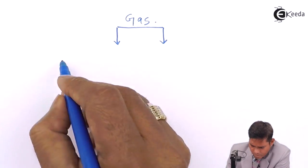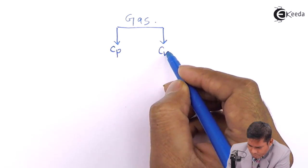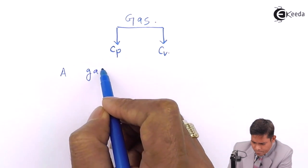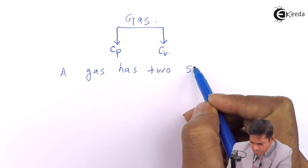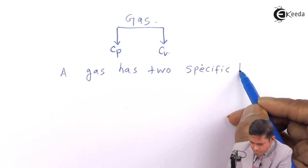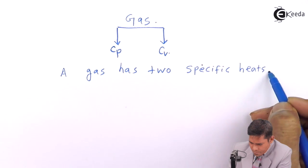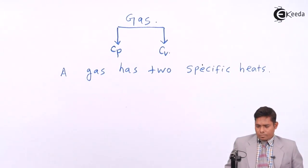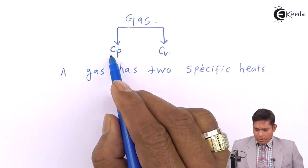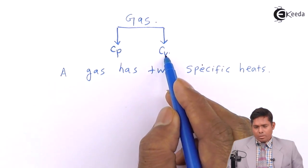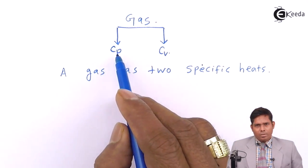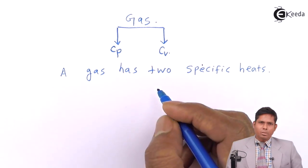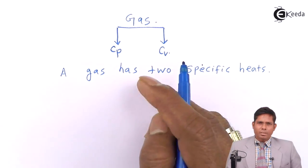One is specific heat at constant pressure, and the second is specific heat at constant volume. A gas has two specific heats: one is called Cp and another is called Cv. Cp is specific heat at constant pressure and Cv is specific heat at constant volume. We will first discuss about the specific heat at constant pressure.